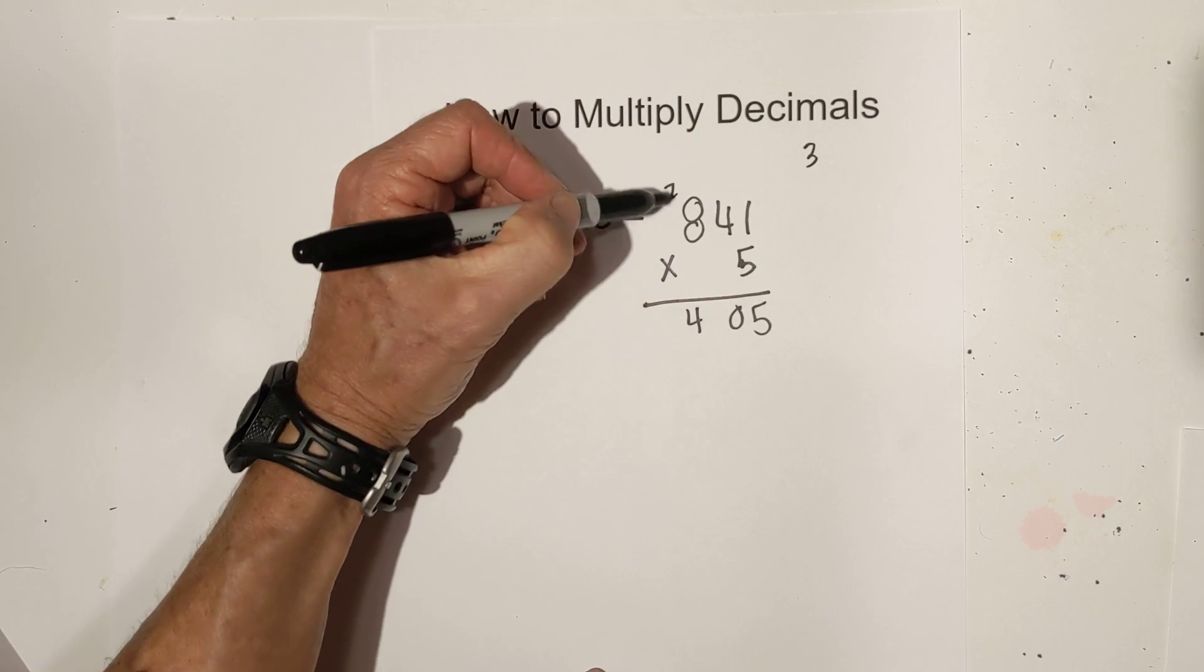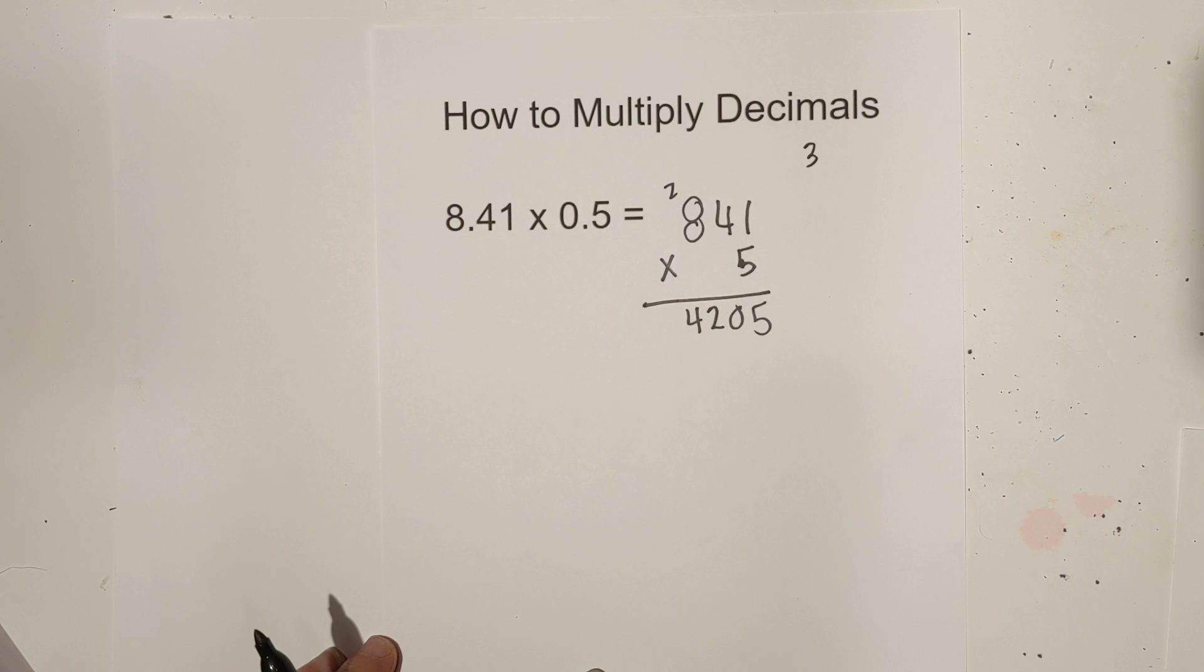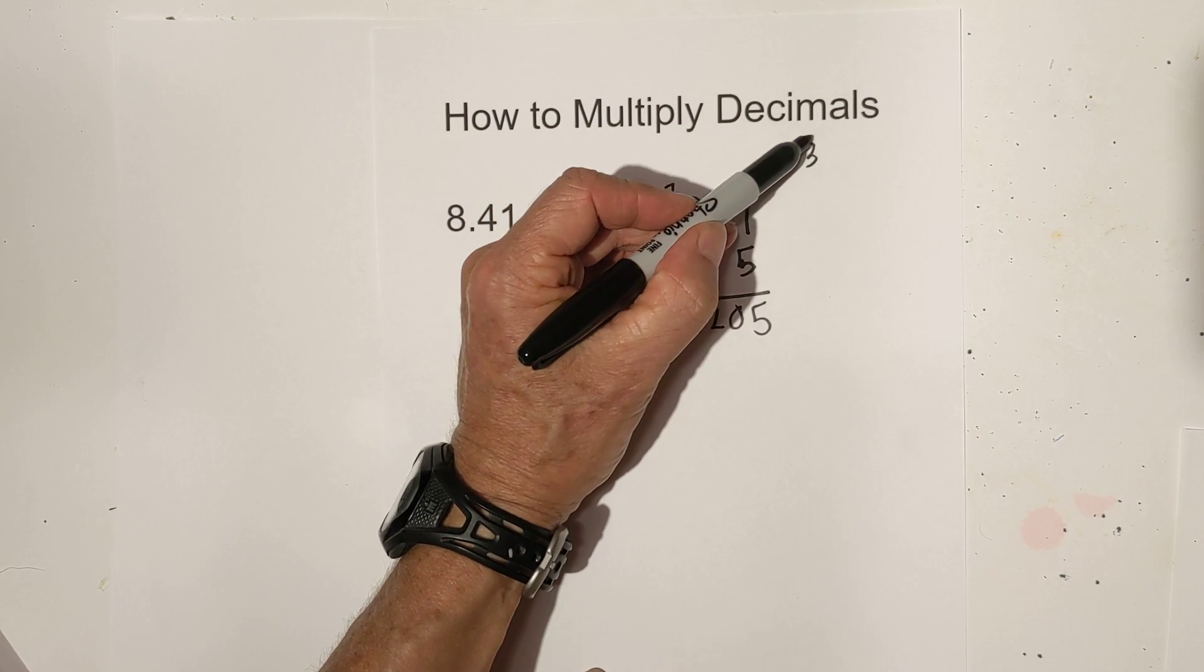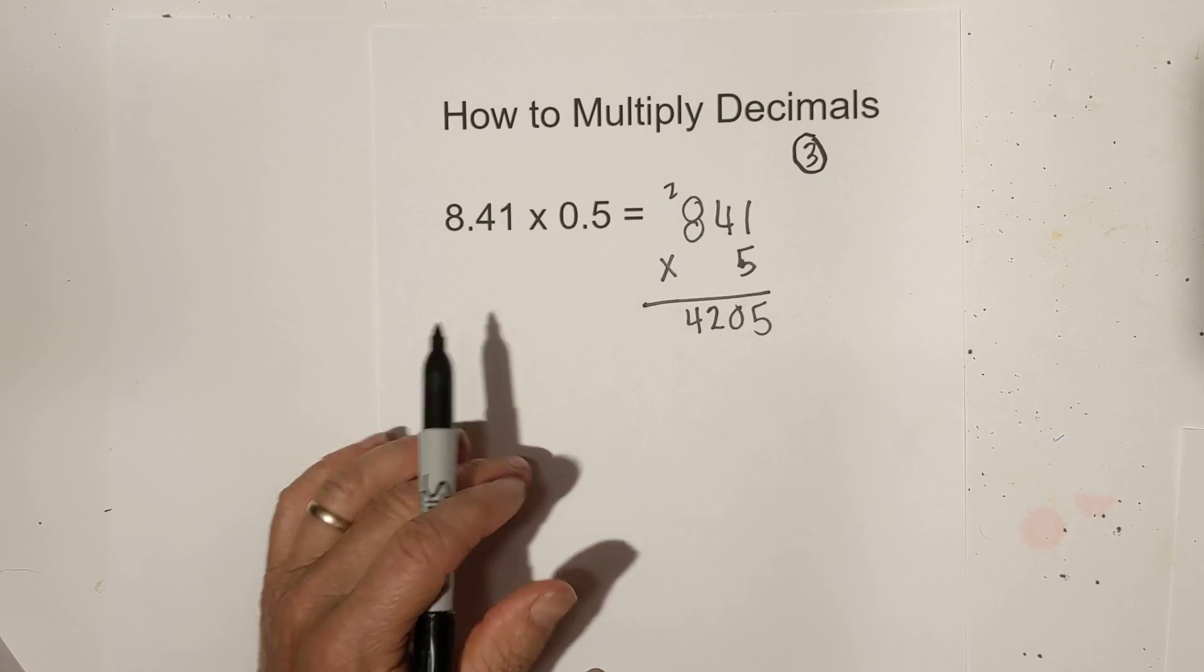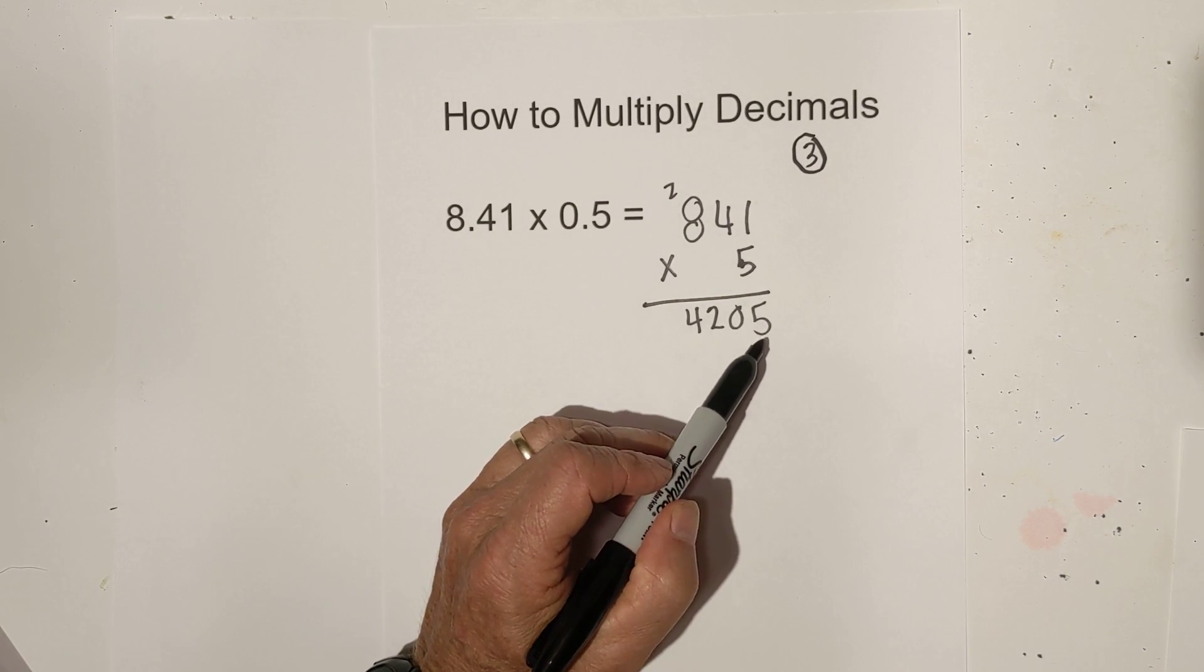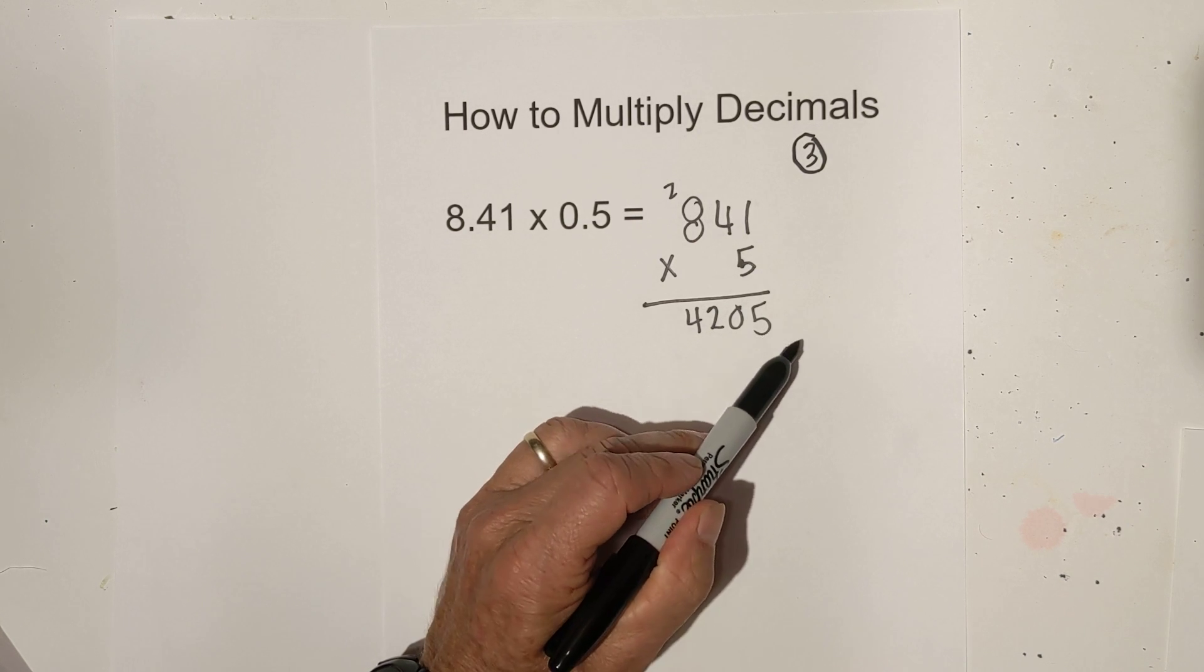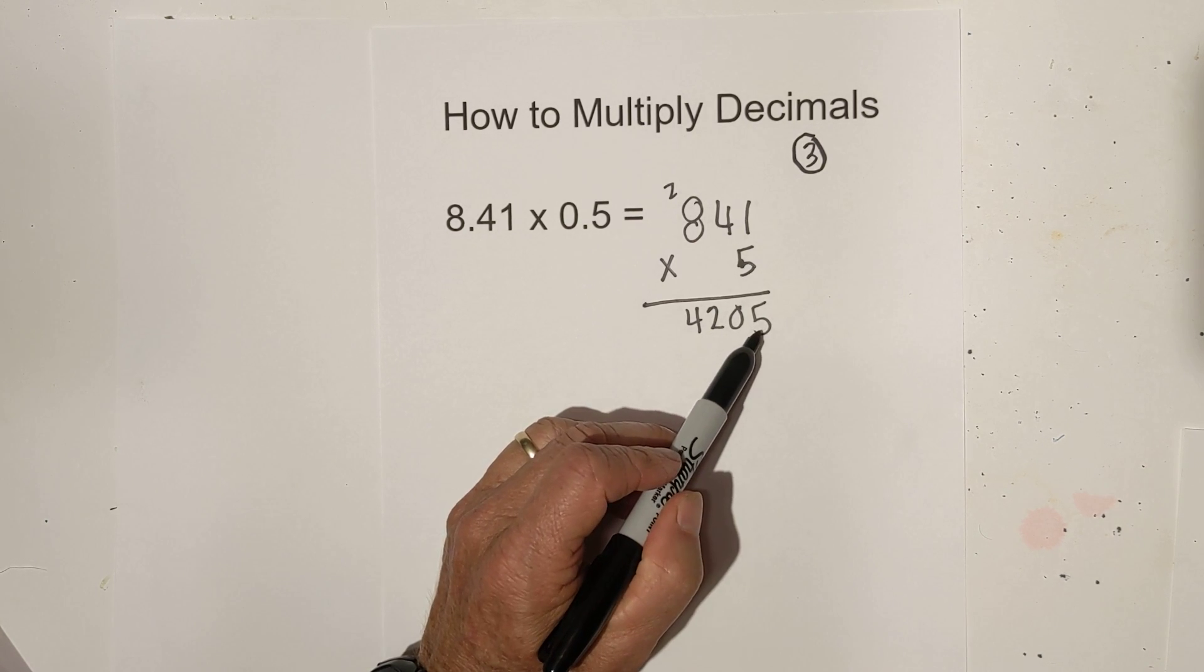And then all you do for step 3 is remember the original 3 that we counted. You want the same number to the right of the decimal. So in order to have 3 to the right of the decimal you can start counting from the far right: 1